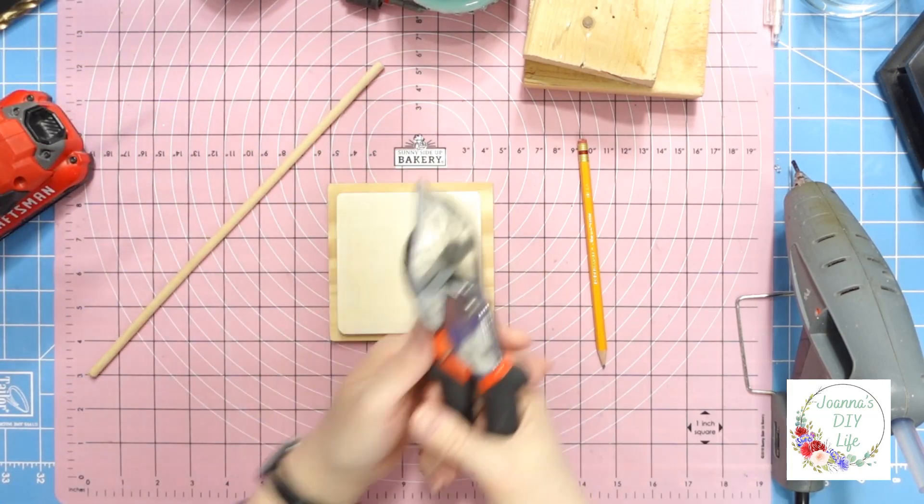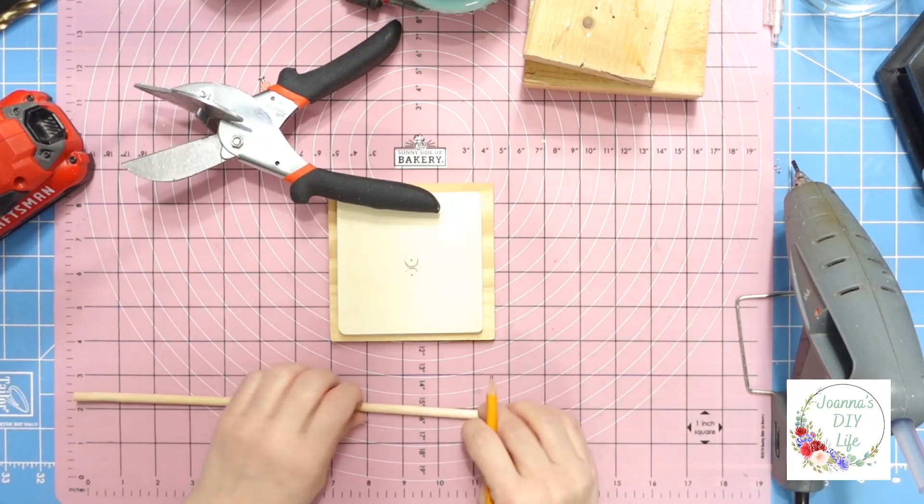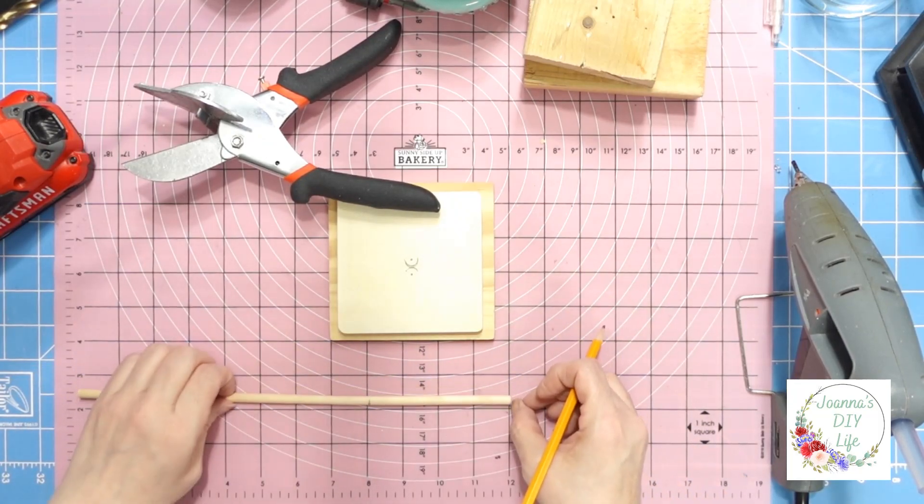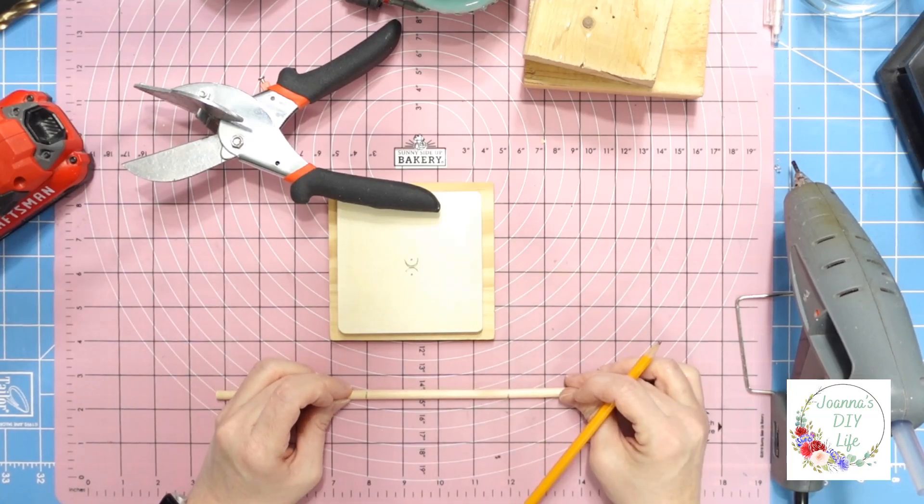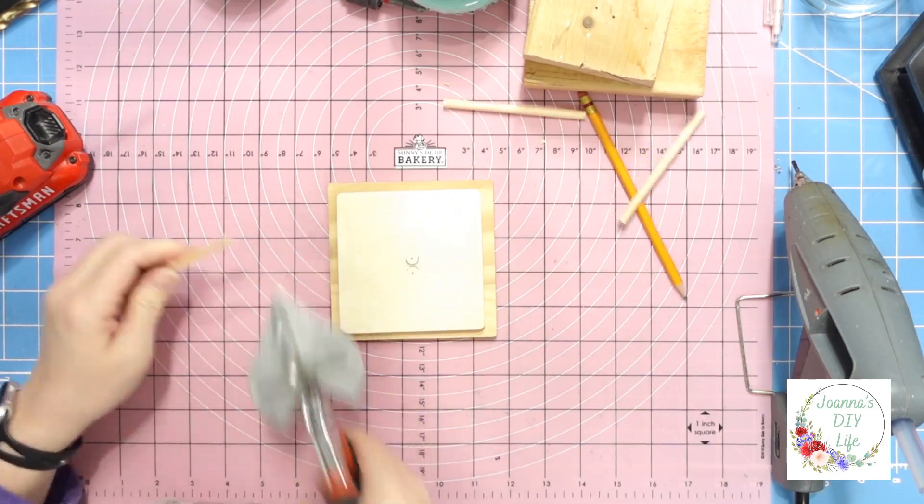If you're not comfortable doing this, you can get someone else to do it for you. My rods are going to be, I'm going to mark them at four inches. So I'm going to cut both rods at four inches. That'll give me plenty sticking up to put ribbon down and to go down inside my hole.